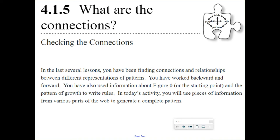In the last several lessons, you have been finding connections and relationships between different types or different representations of patterns. You have worked backwards and forwards. You have also used information about figure zero, which is also called the starting point, and the pattern of growth to write rules. In today's activity, you will use the pieces of information from various parts of the web to generate the complete pattern. The web meaning just changing from one pattern to the next. This is the web right here. You should be pretty good with going from graph to rule to table to graph to all these different ways. That's what we're going to focus on today.